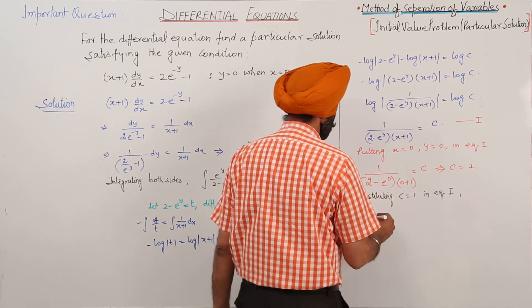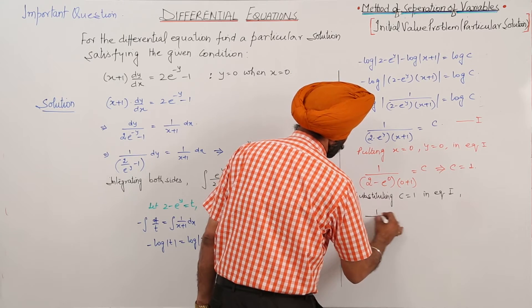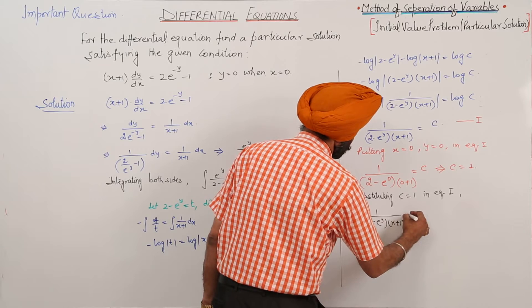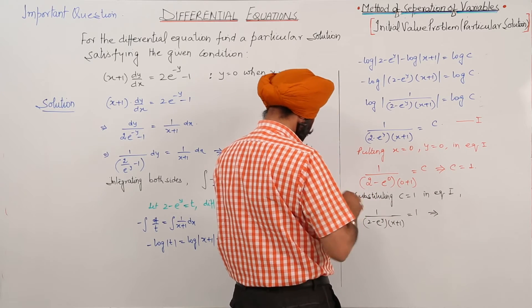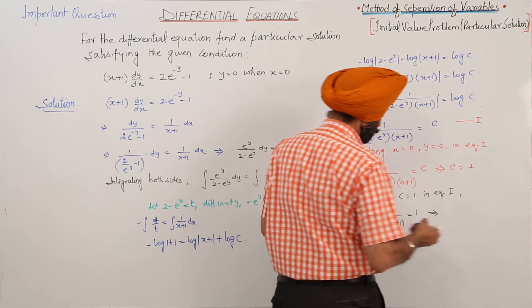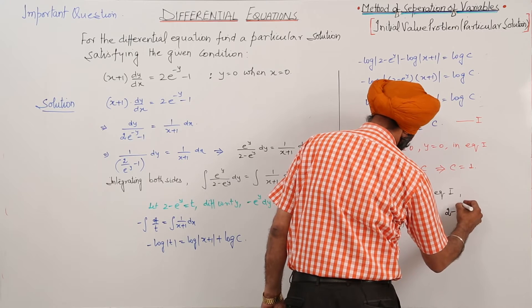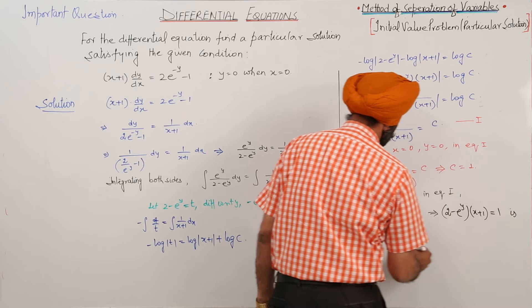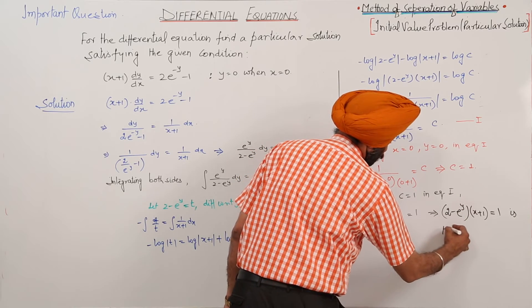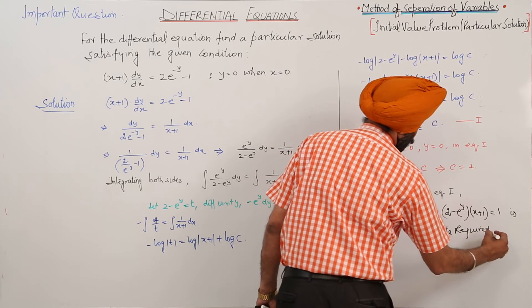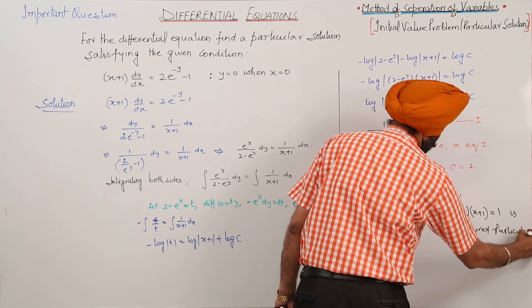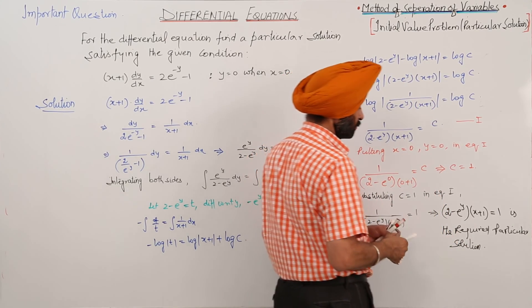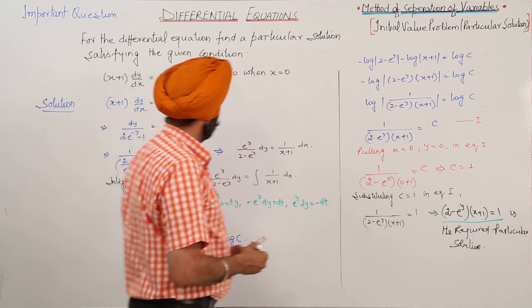Substituting c = 1 back in equation 1, the required particular solution is: 1 upon (2 minus e^y)(x + 1) is equal to 1. Simple.